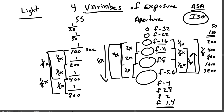The aperture, along with being one of the variables that controls exposure, also controls depth of field. Depth of field is the distance of the nearest and farthest element in a scene that appear to be sharp within the image. The smaller the aperture, the greater the depth of field, and the larger the aperture, the shallower the depth of field.